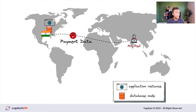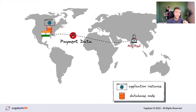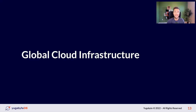Again, for the first version of my application, that's not a big deal if Mr. Red is the only customer I have. But as soon as I decide to grow in India or the rest of the countries in that region, this is going to be a big problem. The good news is that we can use global cloud infrastructure to architect, develop, and deploy our geo-distributed applications properly for both low latency and compliance.